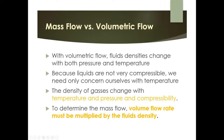To determine mass flow, take the volumetric flow rate and multiply it by the fluid's density. That density component is the only big difference between mass flow and volumetric flow. Depending on the medium, density is affected by at least temperature, and possibly also by pressure and compressibility.